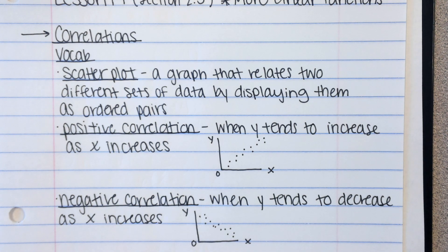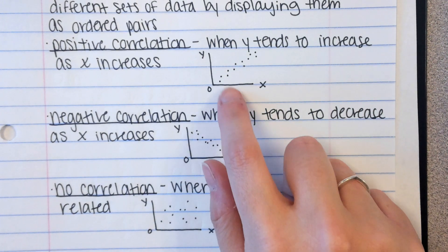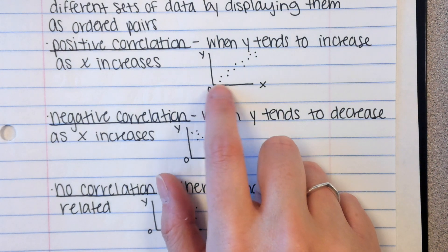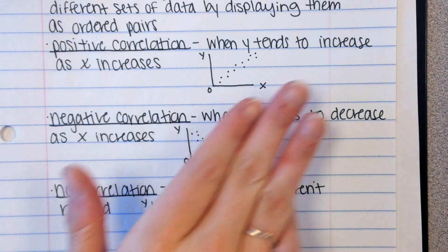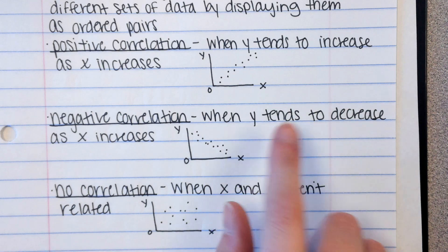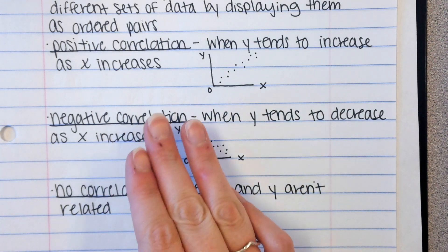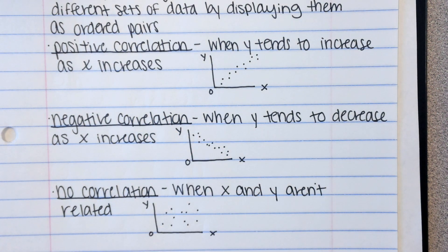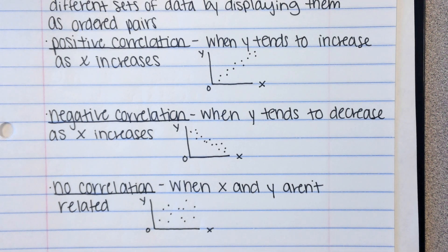When you're looking at a scatterplot, you can have correlations. There are three types. A positive correlation is when Y increases as X increases. So as X gets bigger, so does Y. And you can see this positive increase. You can see this nice slope. A negative correlation is when Y tends to decrease as X increases. So as X gets bigger, the Y gets smaller. And that gives us that negative slope. You can see that formation of almost a line there. No correlation is when X and Y aren't related. There's no real pattern. The points are just all over the place.